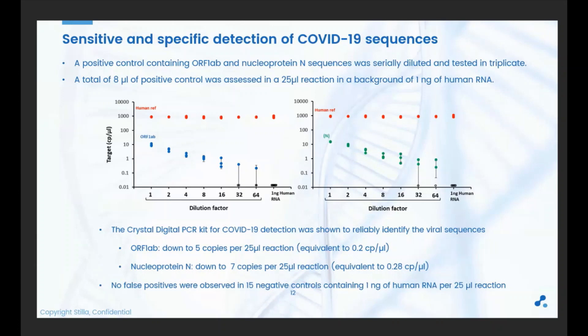Here are some data generated by Stila's R&D showing the sensitivity and specificity of the kit to detect SARS-CoV-2. Plasmids were used as positive controls containing viral genes ORF1AB and nucleoprotein N, serially diluted and tested in triplicate. In this experiment, 8 µL of positive control was assessed in a 25 µL reaction, with 1 nanogram of human RNA also run in each experiment. The kit reliably detected viral sequences down to 5 and 7 copies per 25 µL reaction for ORF1AB and nucleoprotein N respectively. Importantly, no false positive droplets were observed in 15 negative controls containing 1 nanogram of human RNA.